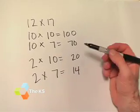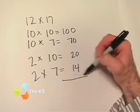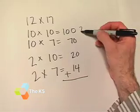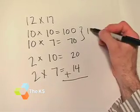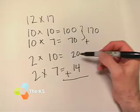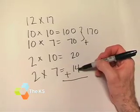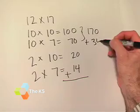Much easier than doing it the traditional way. Now we add all these together. I like to group them together to make the addition easier. 100 plus 70, 170. Plus 20 plus 14, which is 34.